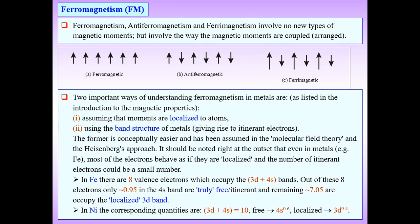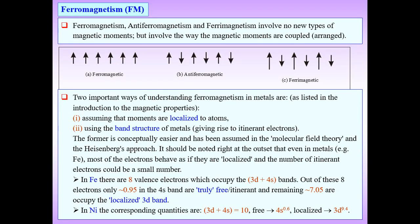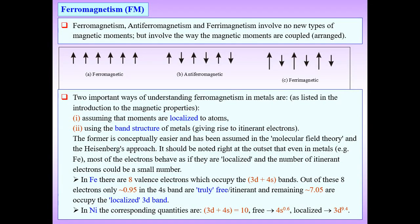For example, in Fe (iron) there are eight valence electrons which occupy the 3d and 4s bands. The electron configuration is 1s² 2s² 2p⁶ 3s² 3p⁶ 4s² 3d⁶, and so on up through 4f¹⁴. This gives eight valence electrons — six in the outermost 3d shell and two in the 4s shell.